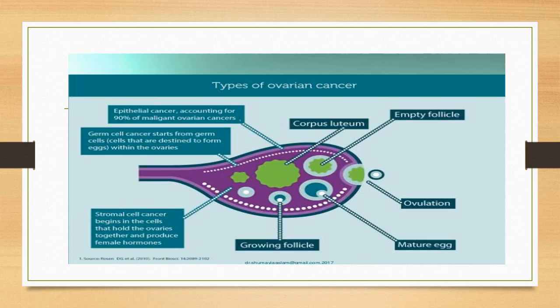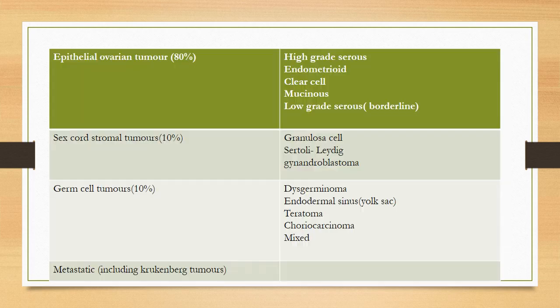Types of ovarian cancer: epithelial ovarian cancers, arising from surface epithelium, account for 90% of malignant ovarian cancers. Germ cell tumors originate from germ cells — cells destined to form eggs within the ovaries. Stromal cell cancers begin in the cells that hold the ovaries together and produce female hormones, so they present with hormonal manifestations. Epithelial ovarian tumors account for 80% of ovarian cancers and can be classified into benign, borderline, and malignant.